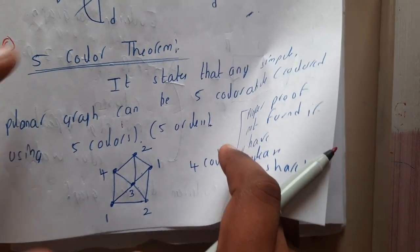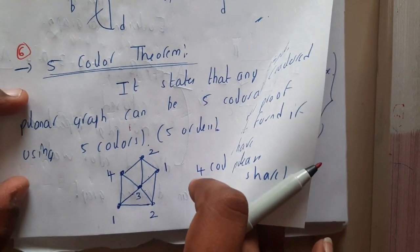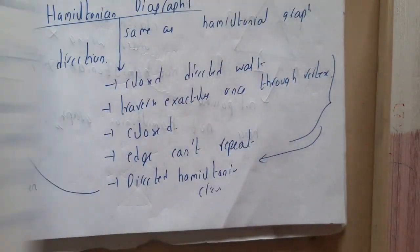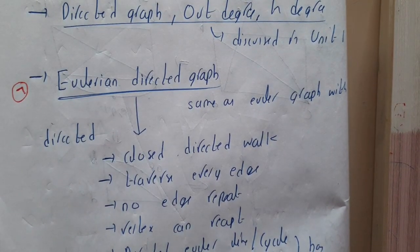I hope everyone got some basic idea about the algorithm, the introduction of the five color theorem and the statement. In the next lecture we'll be going through Euler directed graph. Let us meet in the next lecture. Thank you, thanks for watching.